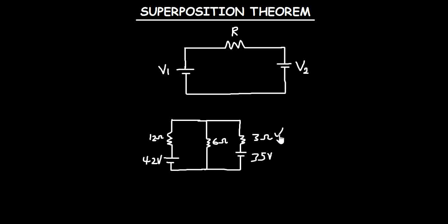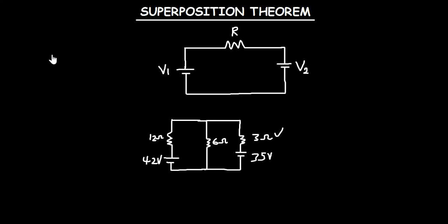So we are going to calculate for the current flowing through this 3 ohms resistor. To apply the superposition theorem, we are going to do this by considering each of the voltage sources acting alone. First of all, we are going to consider the 42 volts acting alone, then later we consider the 35 volts acting alone. To consider one source acting alone, you have to short circuit the other — if it is a voltage source you short circuit it, and if it is a current source you open circuit it.